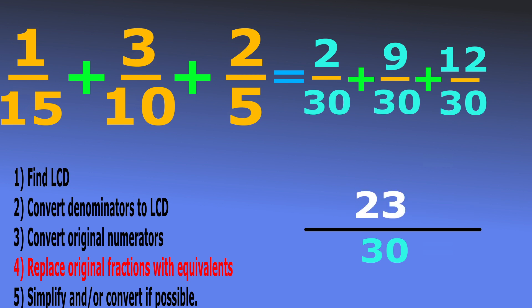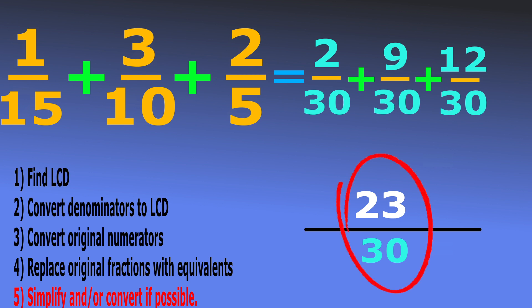Step 5: can we simplify this fraction, or is it an improper fraction we need to convert? Well, 23 is a prime number, so its only factor is 23, and since 23 is not a factor of 30, they have no common factors — this fraction can't be reduced. Do we need to convert it? Only if it's an improper fraction, but the numerator 23 is smaller than the denominator 30, so this is not an improper fraction. Therefore, 23 over 30 is our final answer.